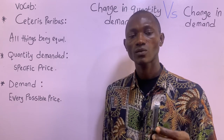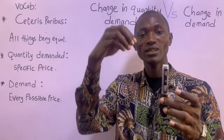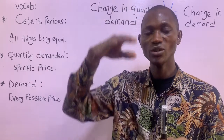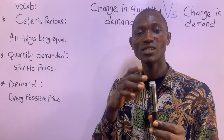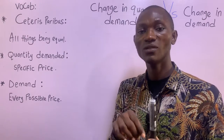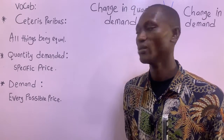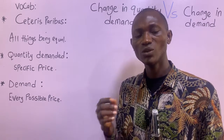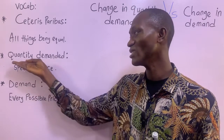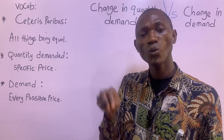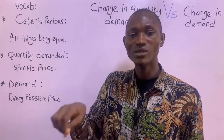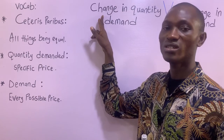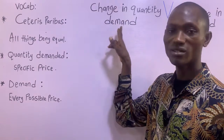For example, when the price of this marker drops, the quantity demanded of it will increase, Ceteris Paribus. Or when the price of this marker increases, the quantity demanded of it will decrease, Ceteris Paribus. So quantity demanded is explained by changes in the price of the commodity. There will be a change in the quantity demanded when there is a change in the price. In short, this concept links to what we call changing quantity demanded.